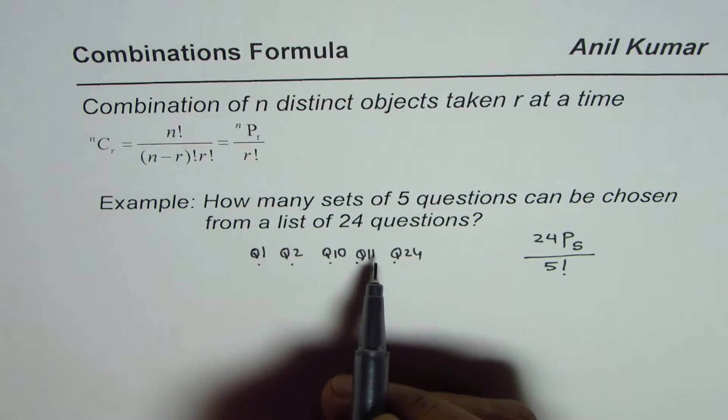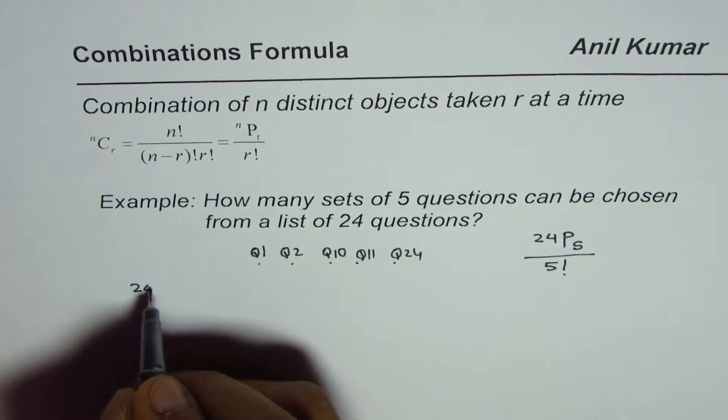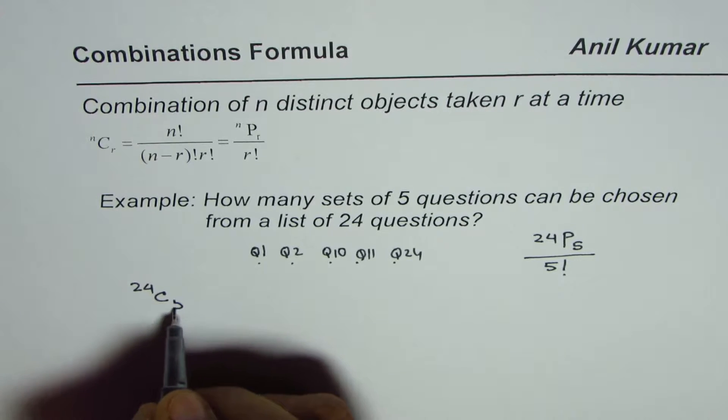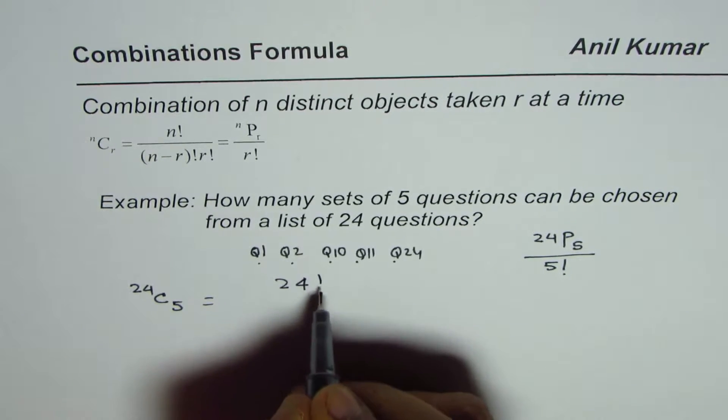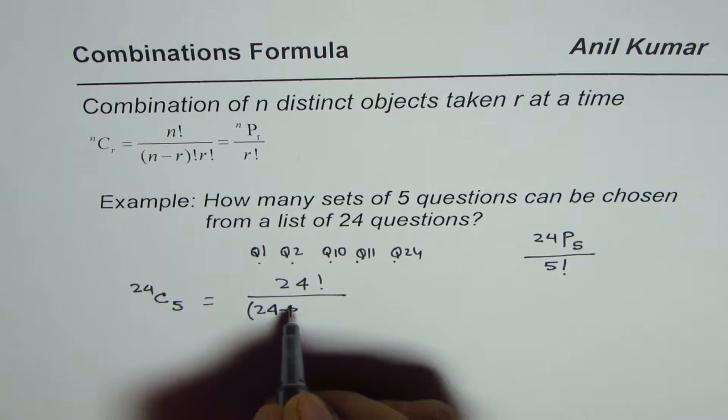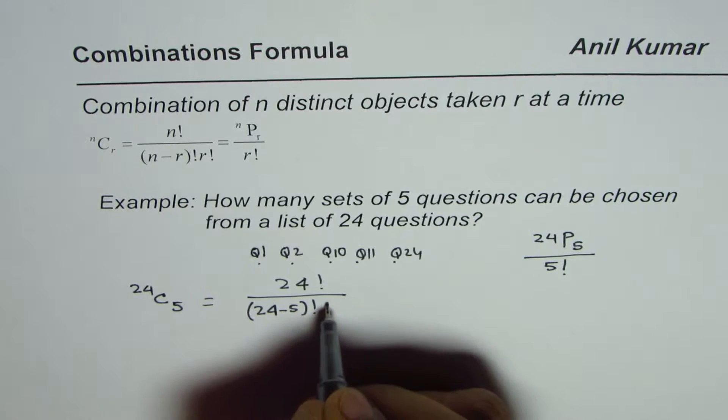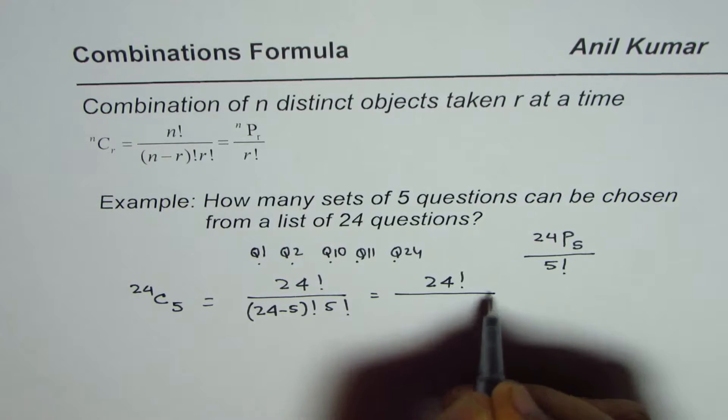We have to select from 24 questions, five, where order is not important. Therefore we could write this as 24C5, and that means 24 factorial divided by (24 minus 5) factorial times 5 factorial. So that is 24 factorial divided by 19 factorial times 5 factorial.